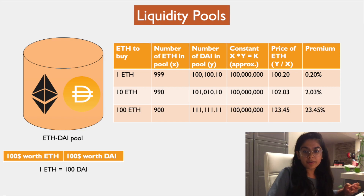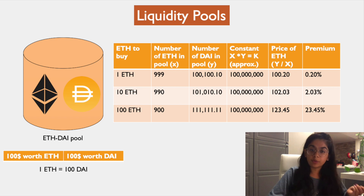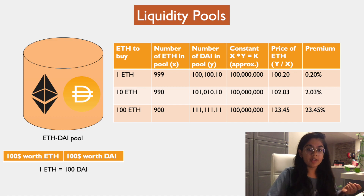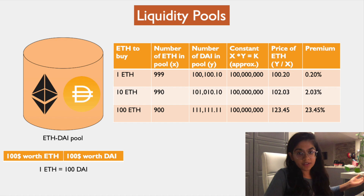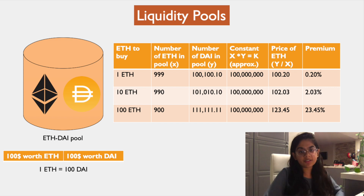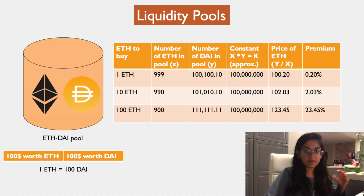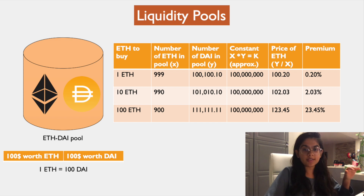When you want to buy 100 ETH you would have to pay a lot more premium — about 23 percent more. So the price of ETH in that exchange is relatively high, whereas outside it may not be that high. That's where arbitragers come in — they will come in and fill the arbitrage until the price is back to the market price.